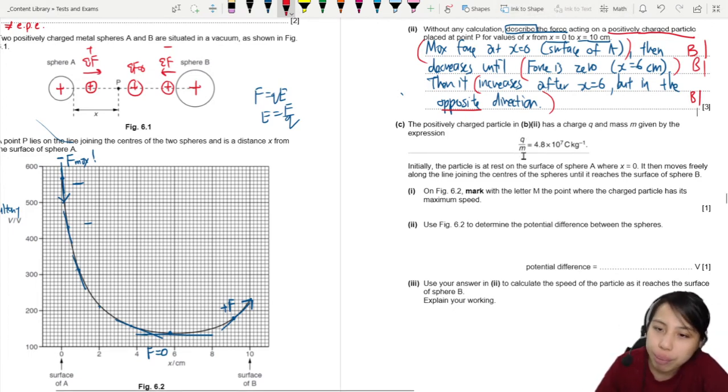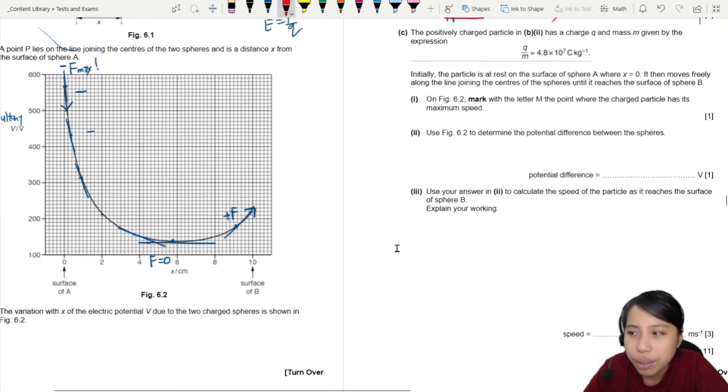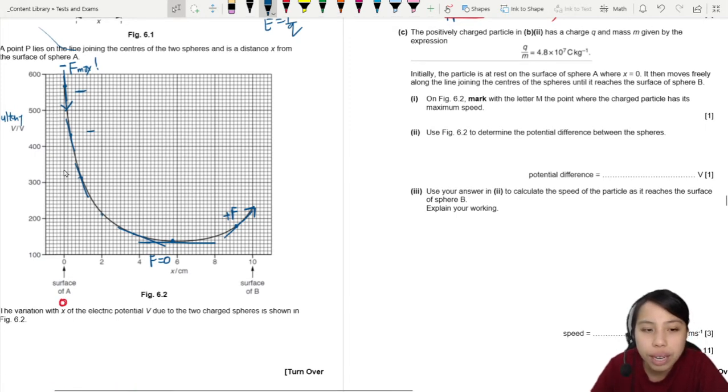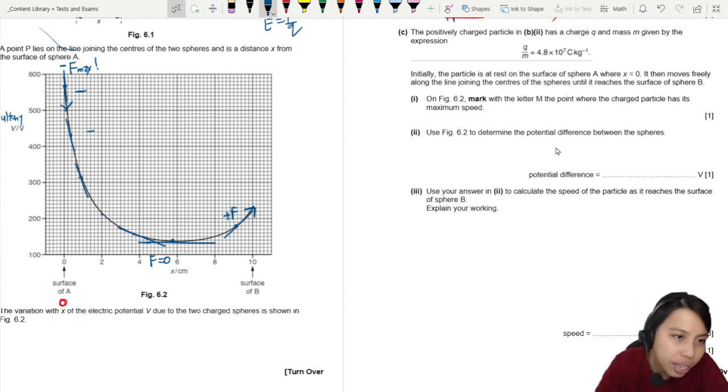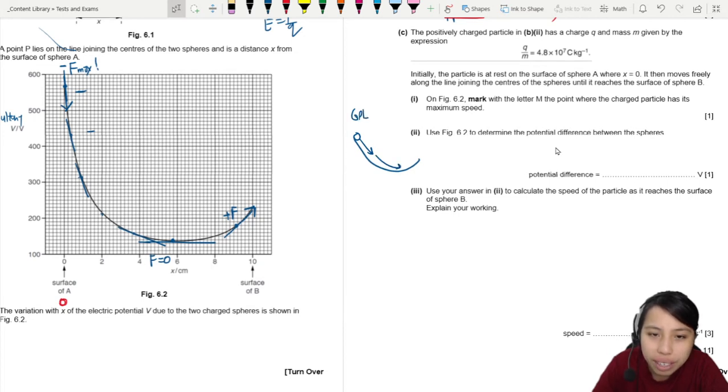So now this part, they give us a Q/M ratio, because they don't want to give us too many information. Initially, the particle is at rest on the surface where x is 0. So we kind of imagine that you put a particle here on A and it's just chilling there. Very strong repulsion is going to slide to the right. It moves freely. Mark the letter where the charged particle has maximum speed. You can kind of imagine it like a skate, like a slide playground. If you put a marble here, it experiences a force, it will slide down where GPE is converted to kinetic energy. But in this case, instead of GPE, electric potential energy is converted to kinetic energy.